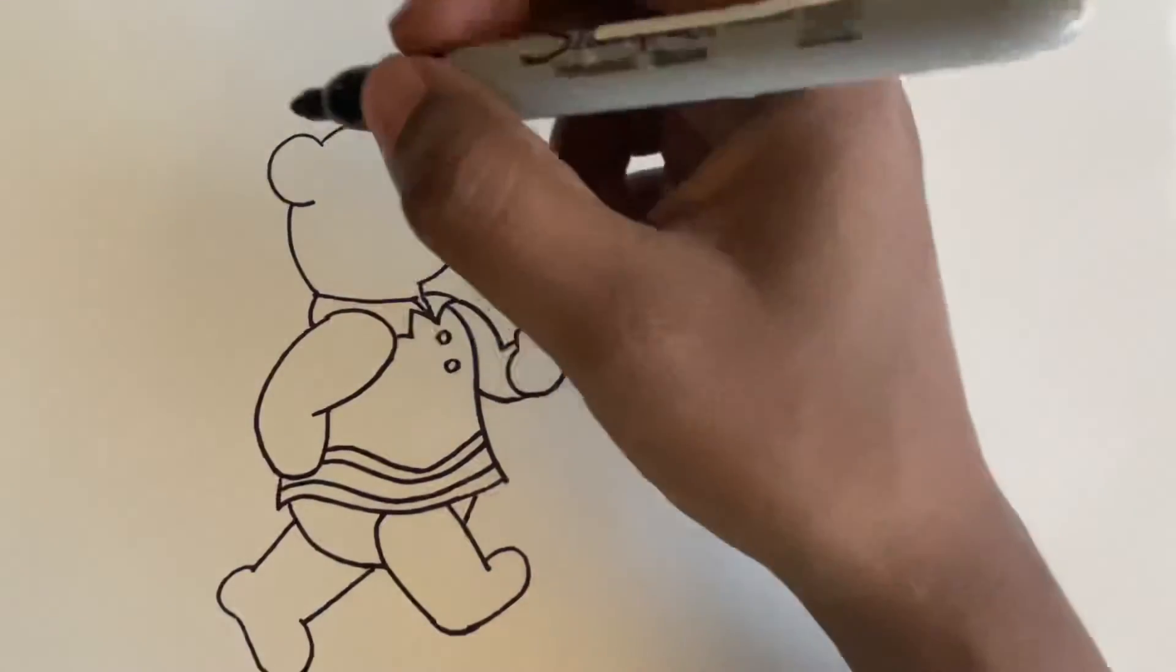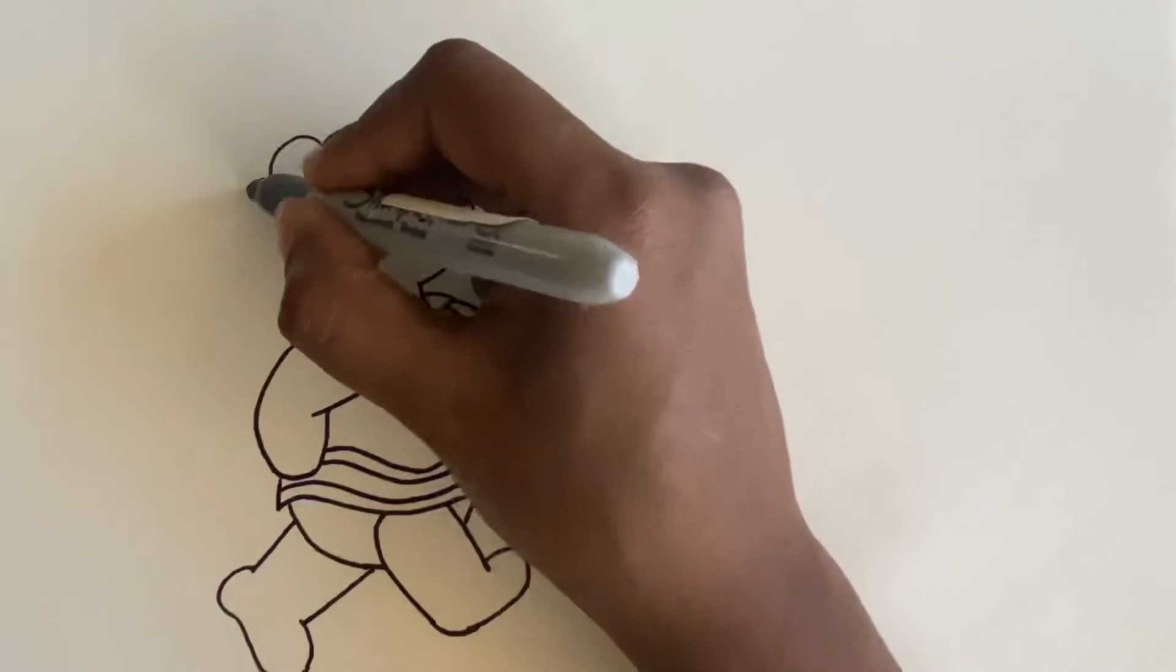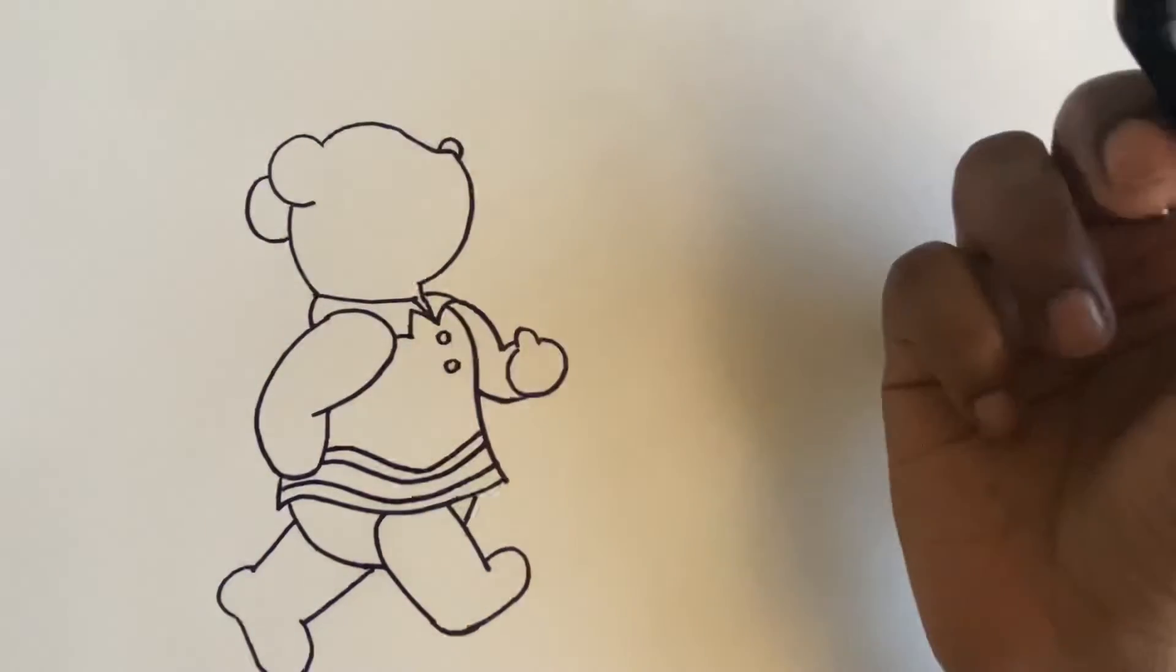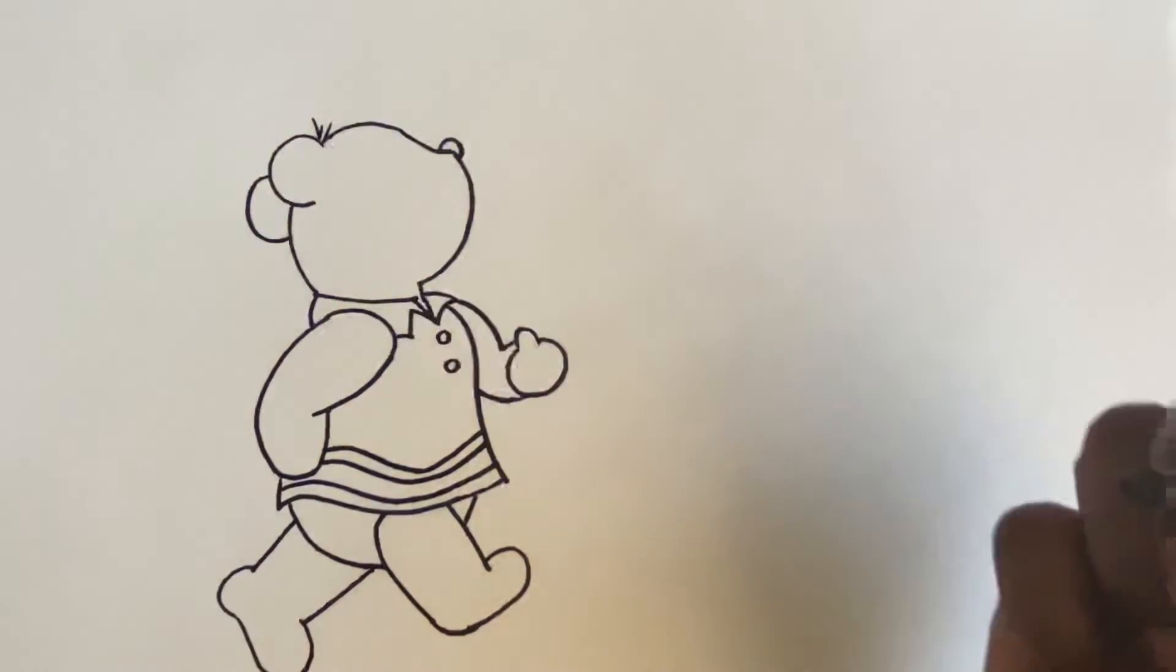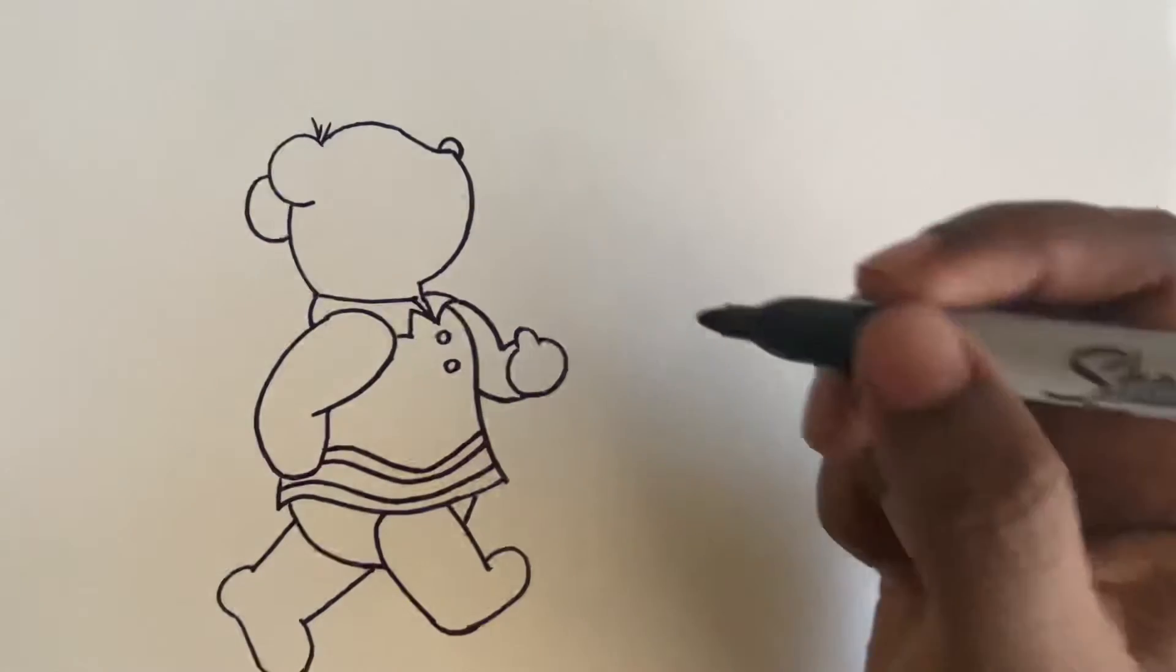That's it, his cool outfit is done. Now let's make one more ear and then a few hairs. Good. And a little tiny eye.